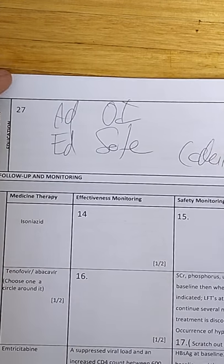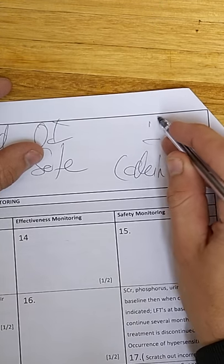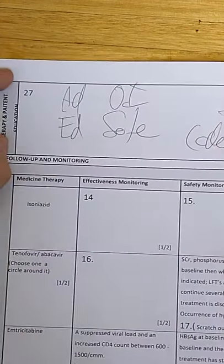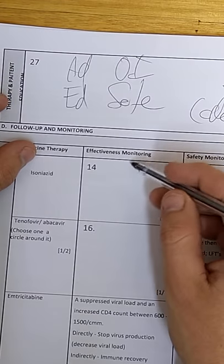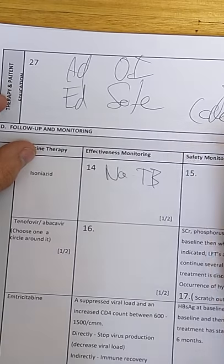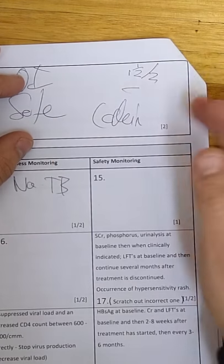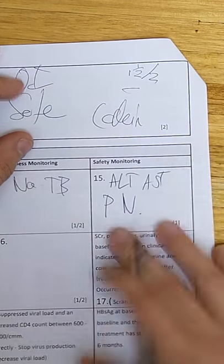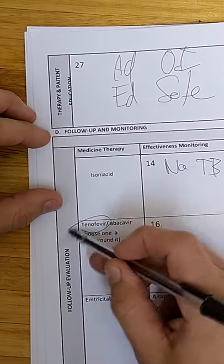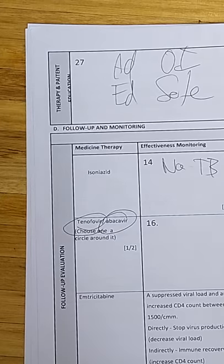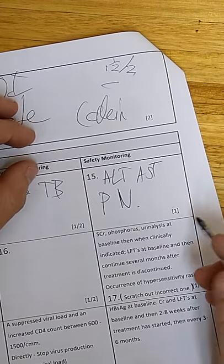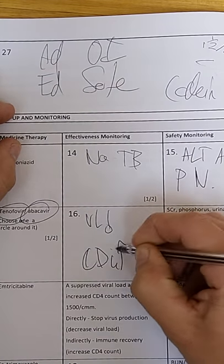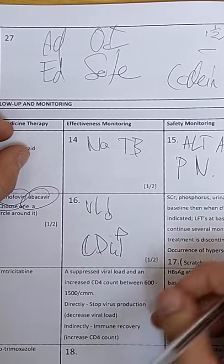Safety monitoring, we already spoke about it a million times. ALT, AST, signs of peripheral neuropathy. Definitely very easy. So in this case, you should have chosen one. And this is actually just a free mark. Both of them are correct. And then effectiveness, viral load going down, CD4 going up. That's how you know that the drug is working.